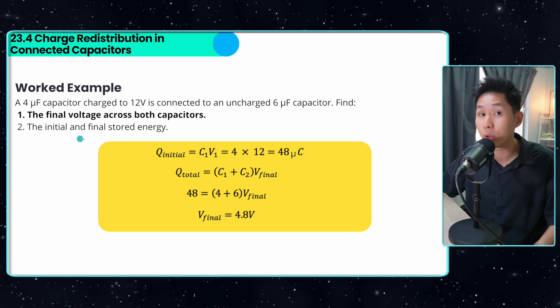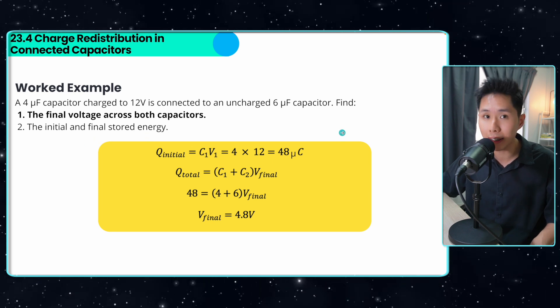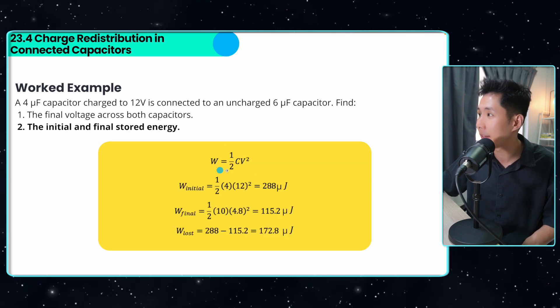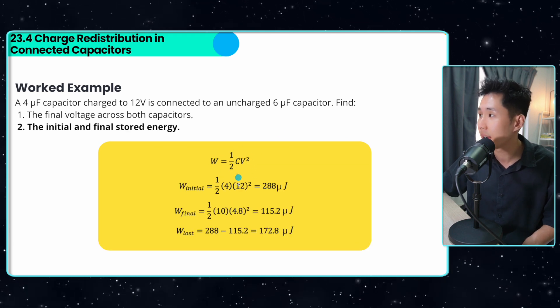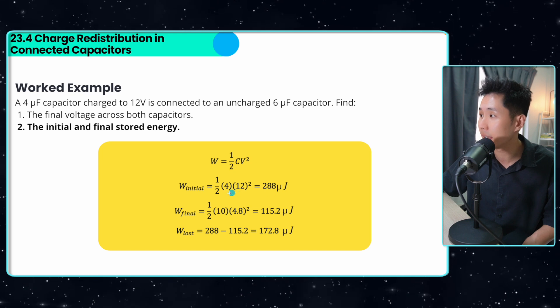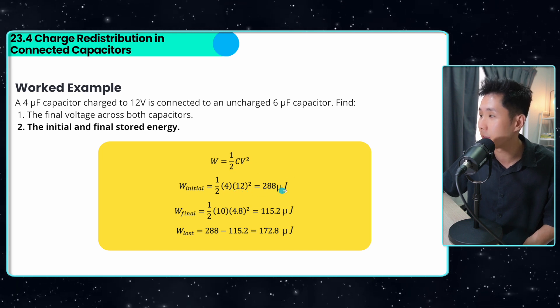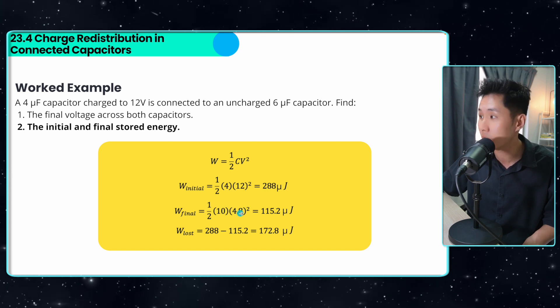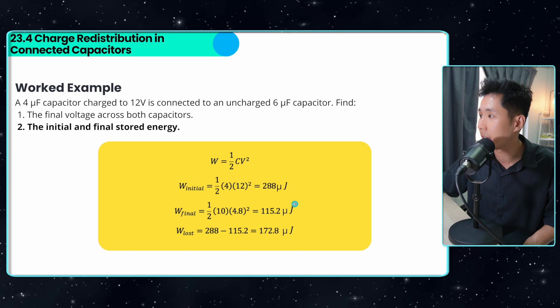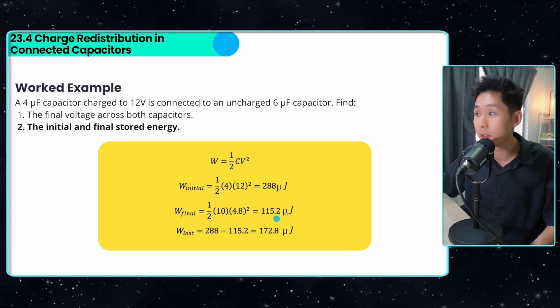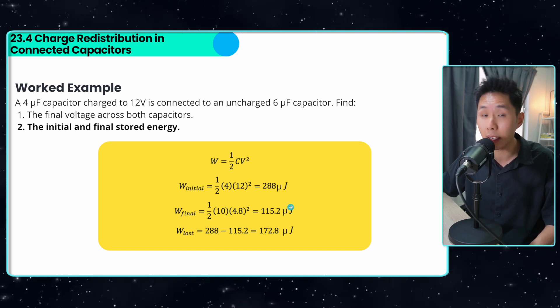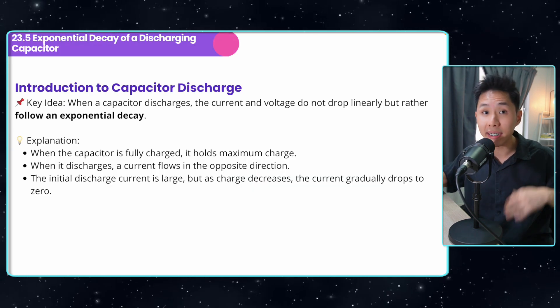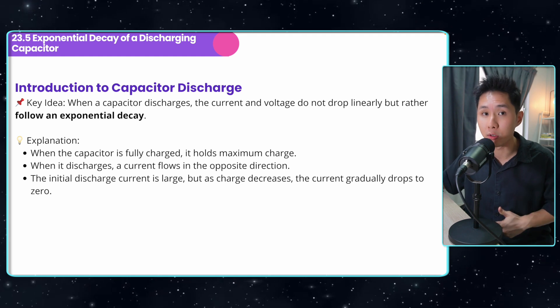Now the second question asks us for the initial and final stored energy. As I said, energy will be lost when charge redistributes. So again, I have this formula half CV squared here. The initial energy I can calculate it using four times 12, which is this amount of energy. And the final, because capacitance has increased and voltage has dropped. So this is the final energy. We can calculate the energy loss using initial energy minus final energy. You can see a lot of energy is lost after the charge is redistributed. Well, that's it for charge redistribution.